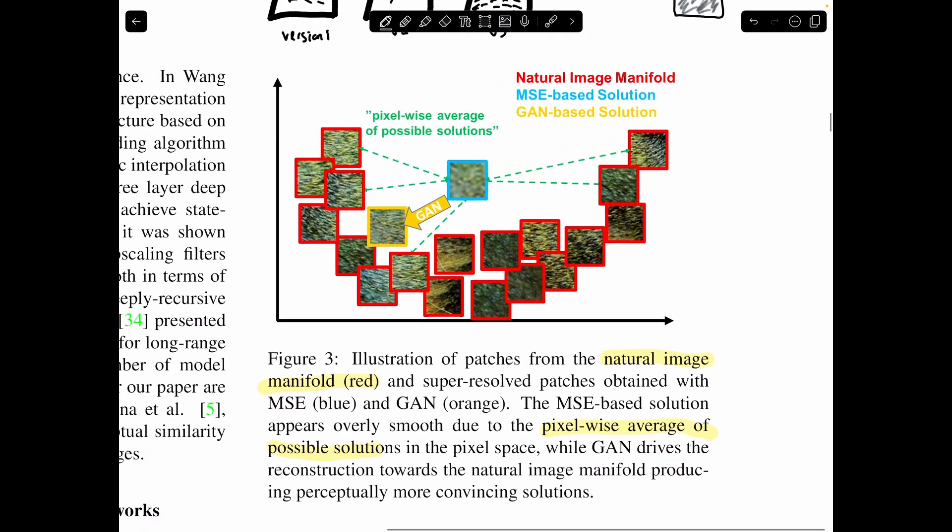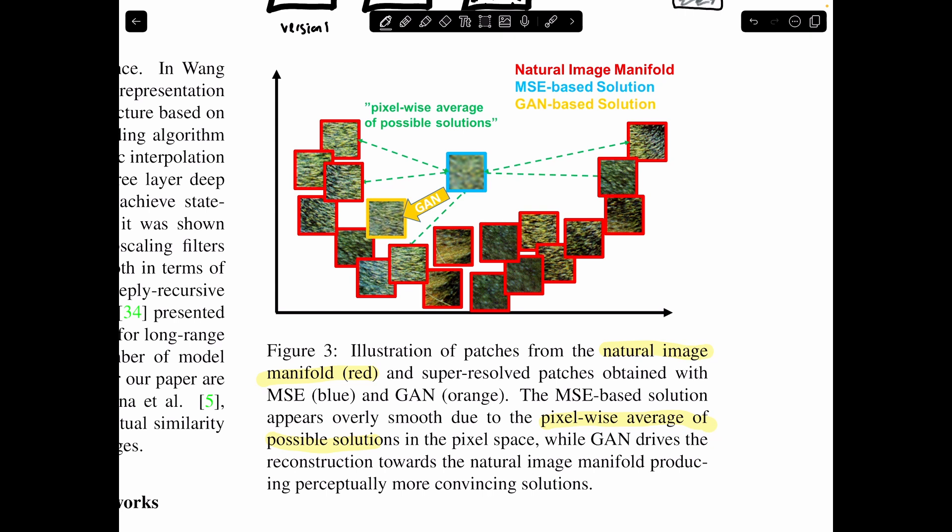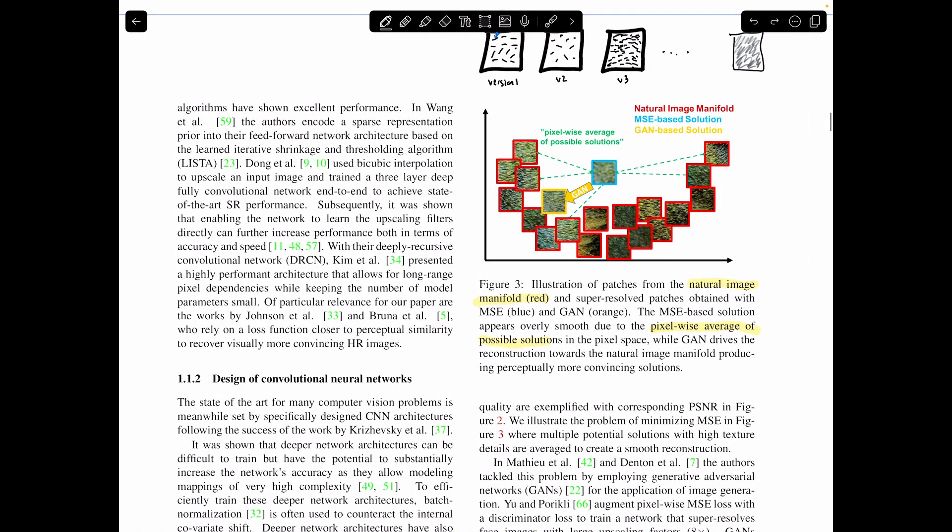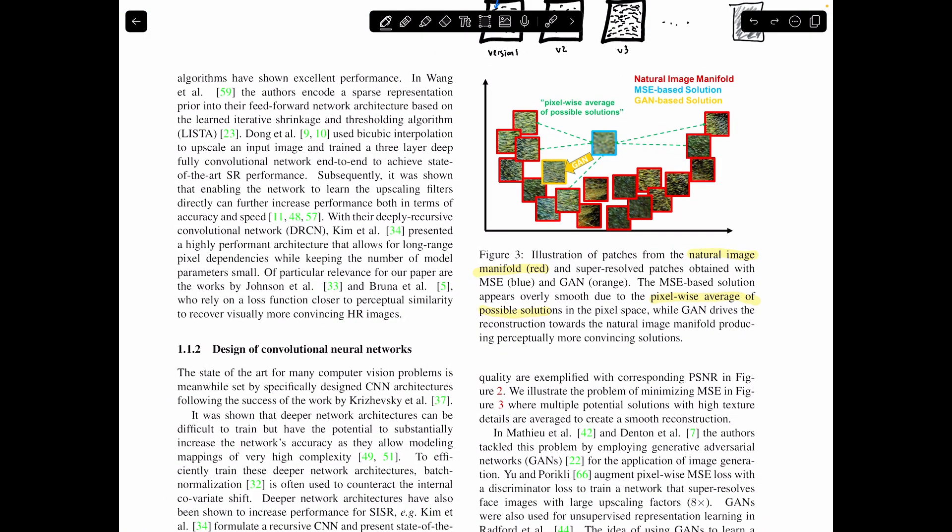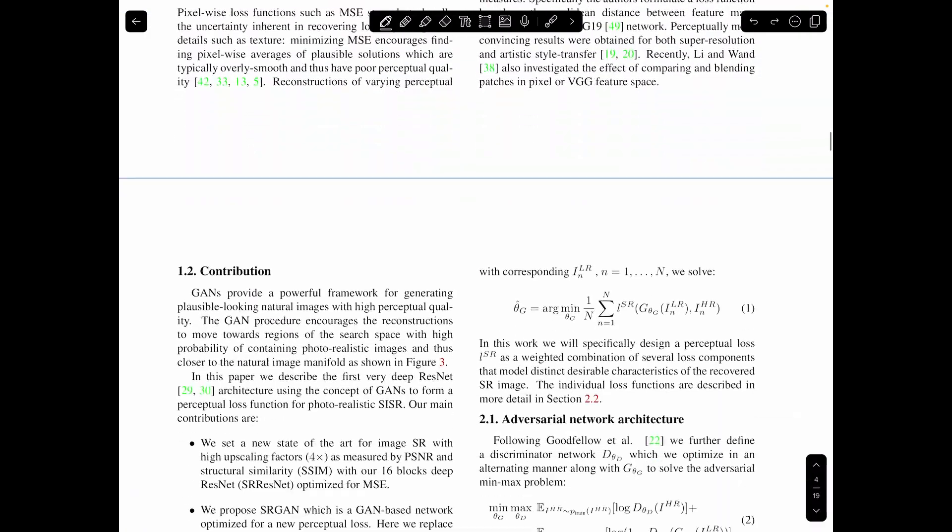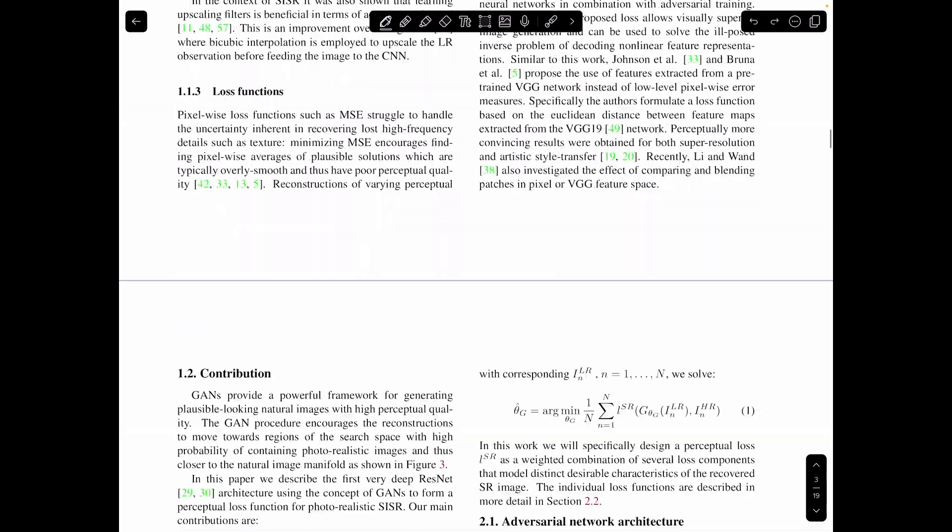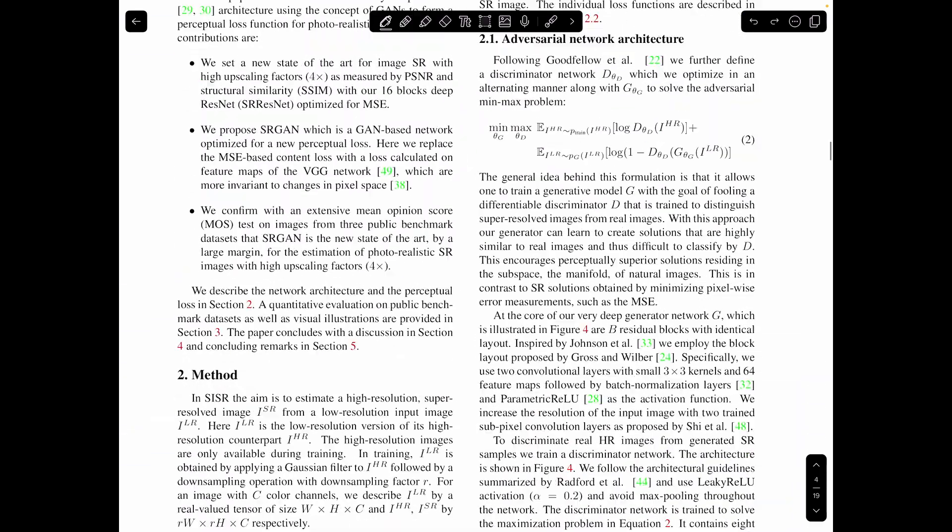Now what the GAN-based solution does is it places it in the natural image manifold by focusing on perceptual similarity. And so you can see that the GAN can get into the natural image manifold, making it more pleasing.